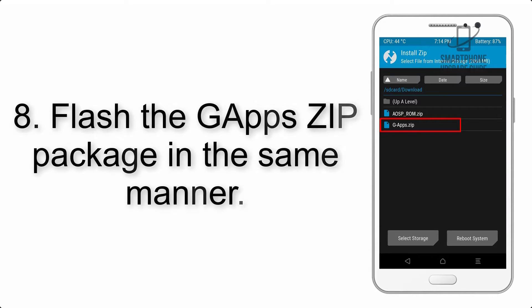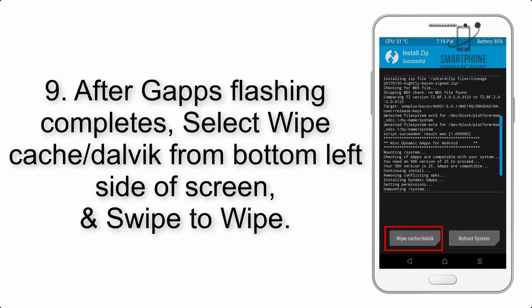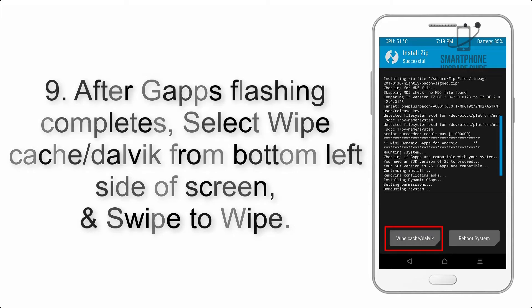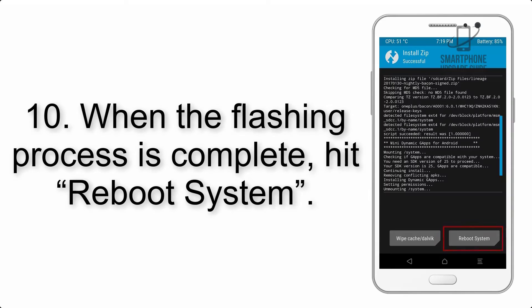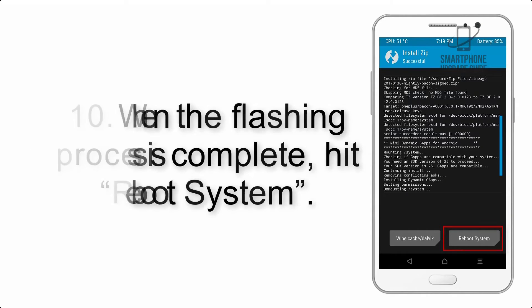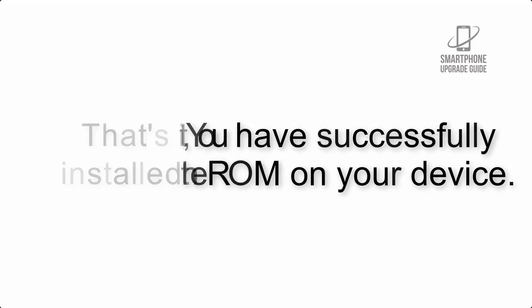Step 8: Flash the GApps zip package in the same manner. Step 9: After GApps flashing completes, select Wipe Cache and Dalvik from the bottom left side of the screen and swipe to wipe. Step 10: When the flashing process is complete, hit Reboot System. That's it — you have successfully installed the ROM on your device.